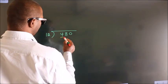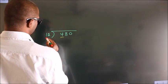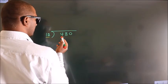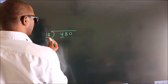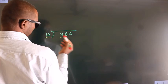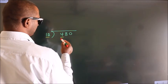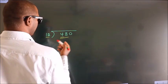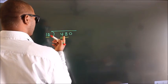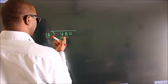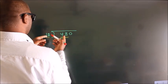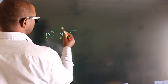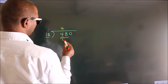Here we have 4, here 12. 4 is smaller than 12, so we should take 2 numbers: 48. When do we get 48? In the 12 table. 12 fours are 48.